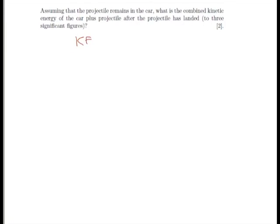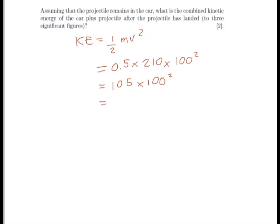Finally, we find the kinetic energy of the combined car plus projectile after the projectile has landed. Using KE = ½mv², that is 0.5 multiplied by the combined mass of 210, multiplied by 100 squared. The kinetic energy equals 1,050,000 joules, or 1.05 × 10⁶ joules.